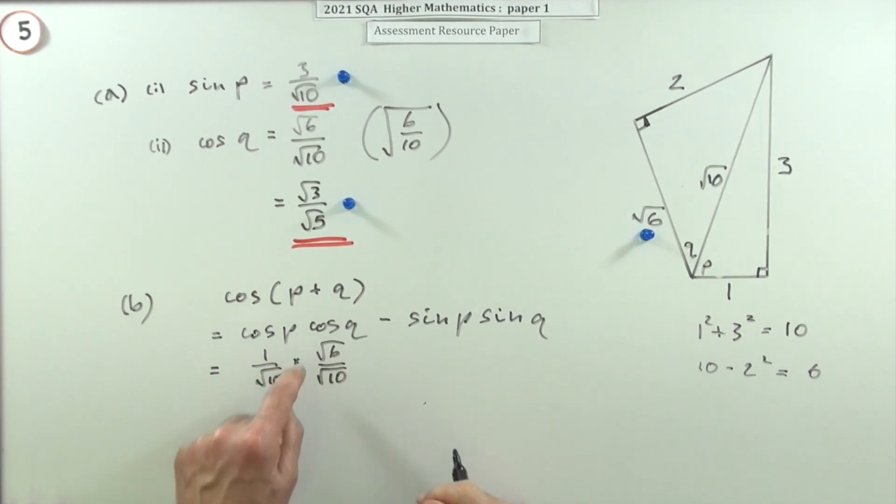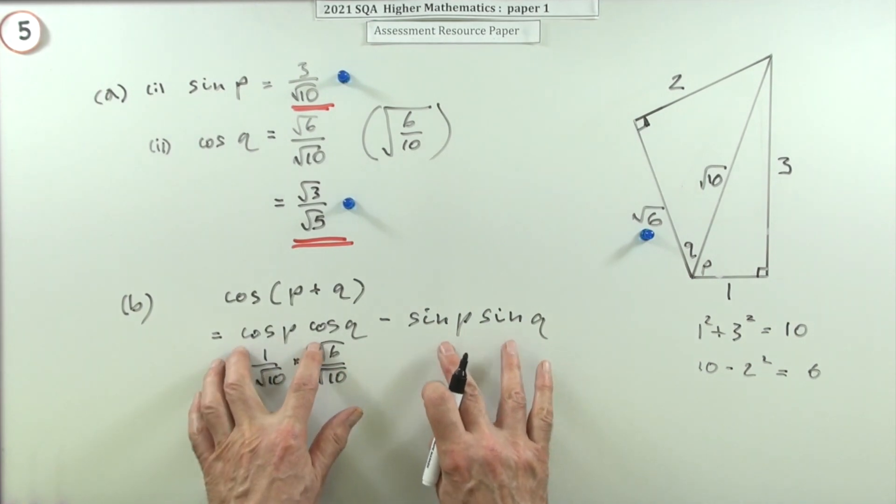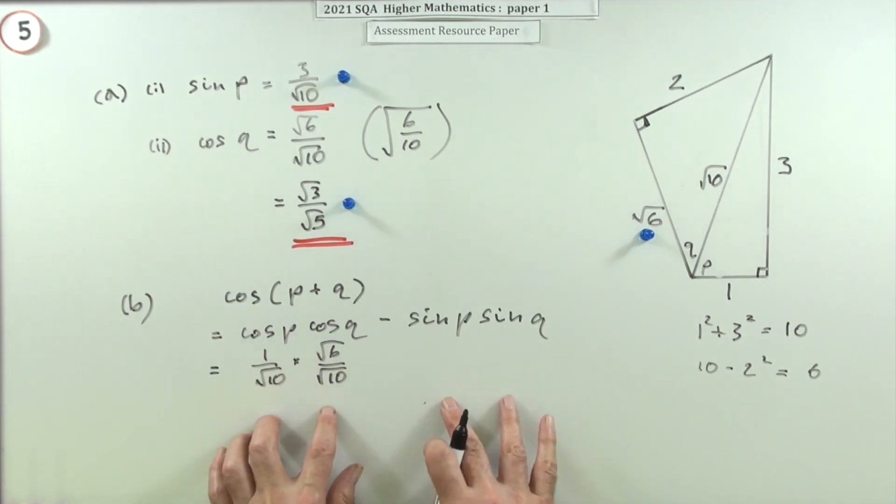I'm going to use √6/√10 rather than this, because I'm going to subtract a pair of fractions, so I'll need a common denominator.